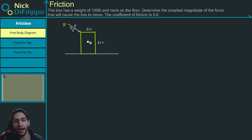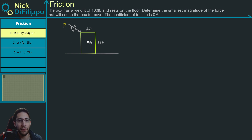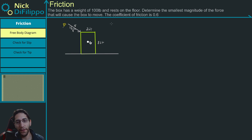In this problem, we have a box and we're applying a force on this box that has some magnitude of P. What we are asked to figure out is if this box has a weight of 100 pounds, what is going to be the smallest magnitude of force P that we can apply to make the box move — to cause impending motion. We are told that the coefficient of static friction is equal to 0.6.